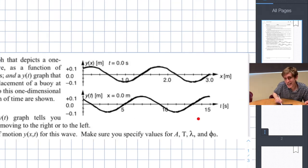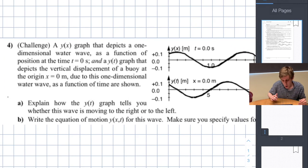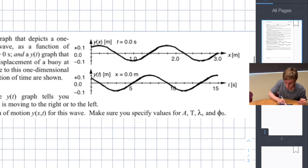Note this graph is not a picture of the wave like the other graph. It just shows us how the buoy moves up and down as time passes. So we want to know which direction the wave is moving. Well, let's consider where the buoy is at the initial time.